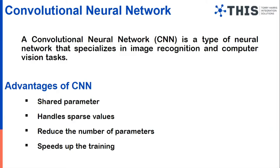Convolutional neural network. It is a powerful network architecture in neural networks that specializes in computer vision tasks and image recognition. The advantages of using a convolutional neural network are that it shares parameters and handles sparse values. Due to parameter sharing, only the low-noise meaningful information is shared. By reducing the number of parameters, we can speed up training and reduce the computational cost. So we are going with a convolutional neural network.